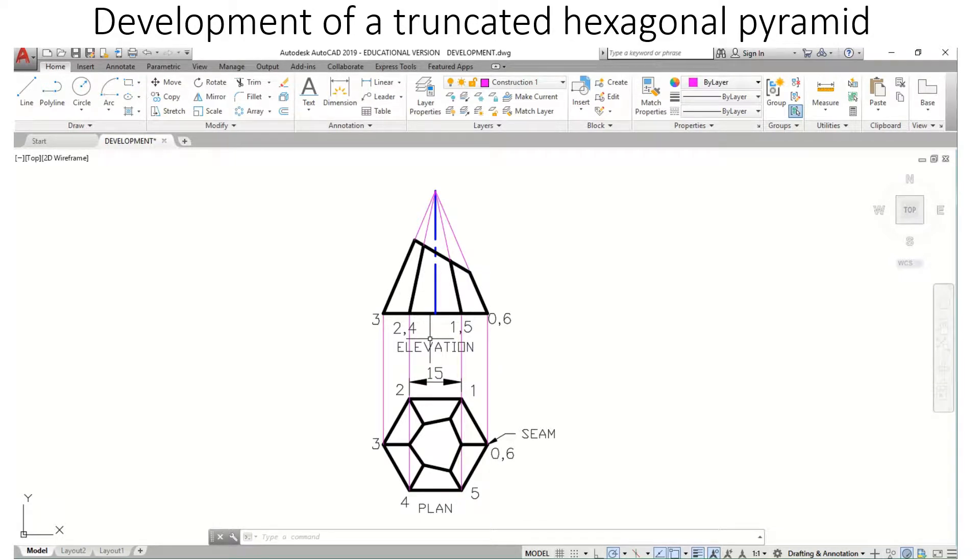Here we have the plan and elevation of a hexagonal pyramid, which we're going to do the development of. Because it's a pyramid, we have to use radial line development.